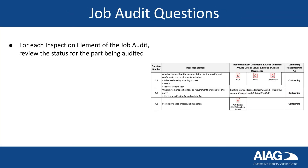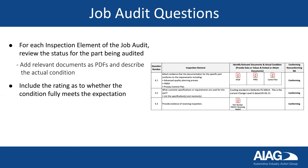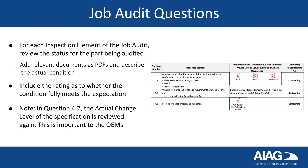For each inspection element of the job audit, review the status for the part being audited. Add relevant documents as PDFs and describe the actual condition. Include the rating as to whether the condition fully meets the expectation. Note that in question 4.2, the actual change level of the specification is reviewed again. This is important to the OEMs.